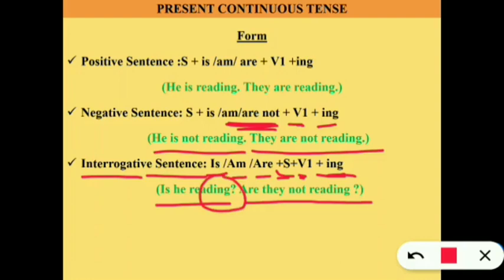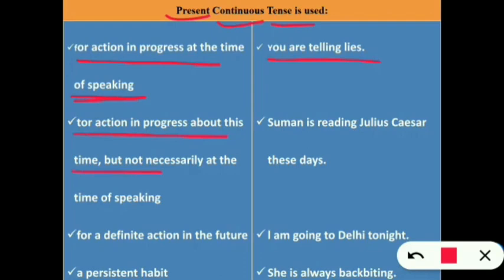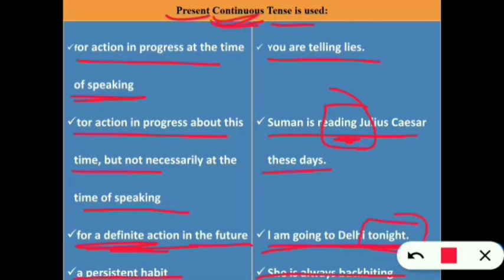Wherever you find the -ing form, this is a continuous tense. Uses of present continuous tense: for action in progress at the time of speaking ('you are telling lies'); for action in progress around this time but not necessarily at this exact moment ('Sooman is reading Julius Caesar these days'); for a definite action in the future ('I am going to Delhi tonight'); and to show a persistent habit ('she is always backbiting').